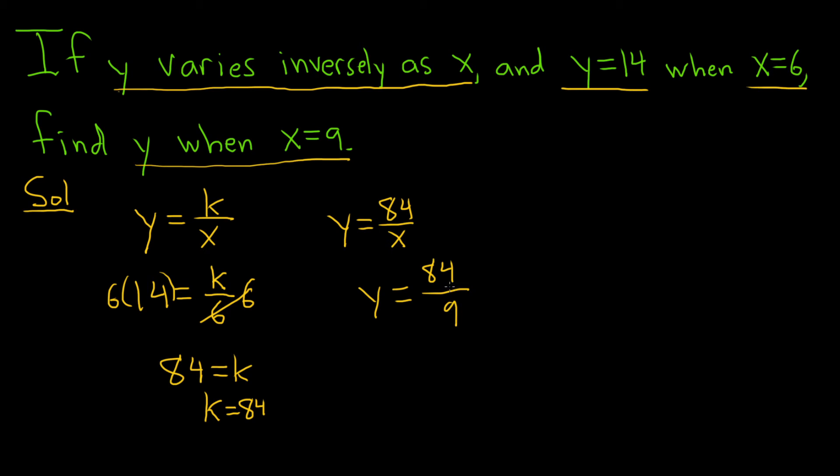And I don't think we can, can we simplify 84 over 9? Let's see, 8 times 9 is 72. 9 times 9 is 81. So it's not going to work out very nicely. 3 goes into 9, and I don't think 3 goes into, it does, it does. 3 goes into 84. 84 is 3 times 28. A little bit sneaky. So this would be, in reduced form, it would be 28 over 3. That would be the final answer.